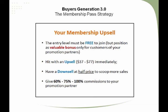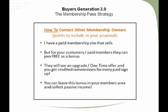Here is how to craft your membership upsell. The entry level must be free to join, but position it as a valuable bonus only for customers of your promotion partners. Hit them with an upsell immediately — priced between $37 and $77 — and it must also have a downsell at half price. Give 60% to 100% commissions to your promotion partners. When you contact them by email, Skype, or any other means, mention that you have a paid membership site currently selling in the marketplace.